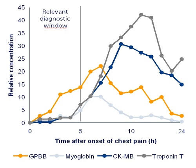It can also be a substance whose detection indicates a particular disease state — for example, the presence of an antibody may indicate an infection. More specifically, a biomarker indicates a change in expression or state of a protein that correlates with the risk or progression of a disease, or with the susceptibility of the disease to a given treatment.